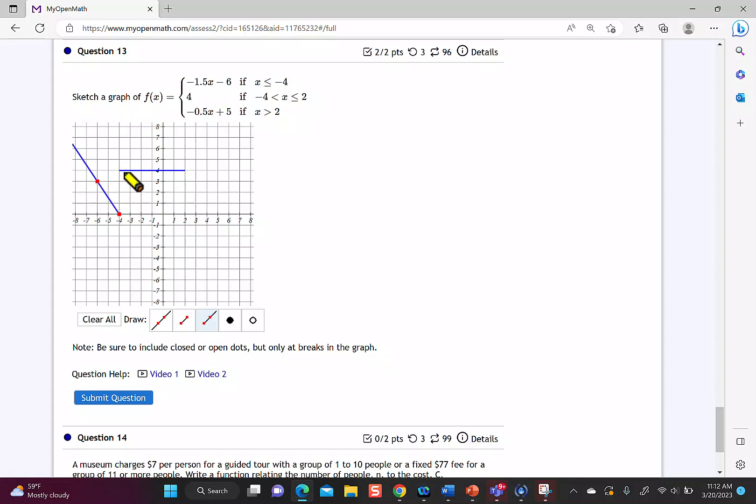What I can see right now is these two parts of the function don't touch. So when I'm looking at negative 1.5x minus 6 when x is less than or equal to negative 4, the less than or equal to says I should have a closed dot at the end of this piece. So I'm going to go over to the closed dot and I'm going to put that at negative 4, 0.